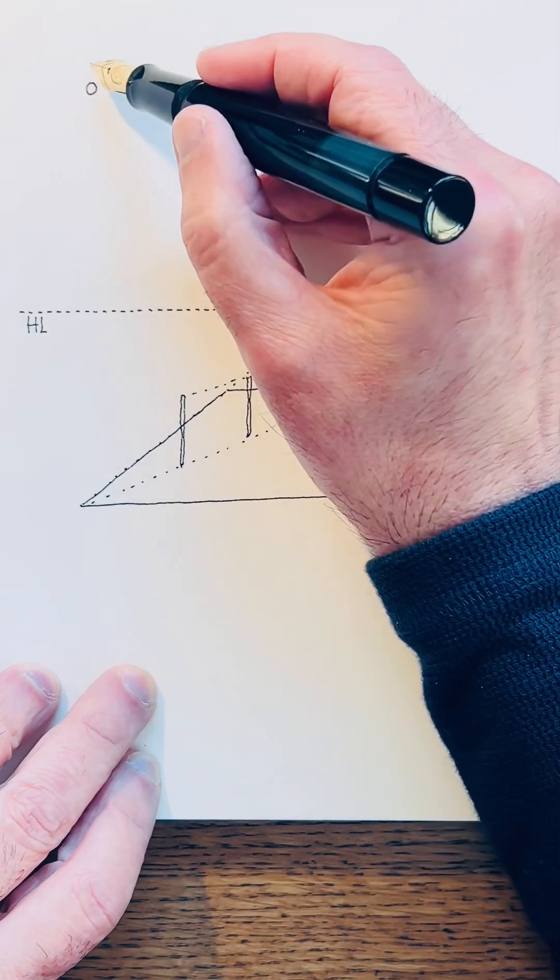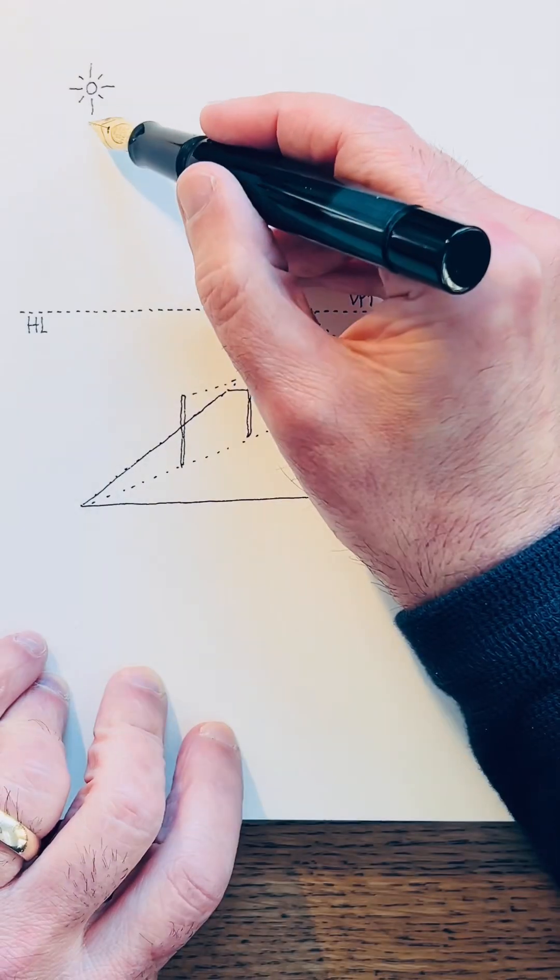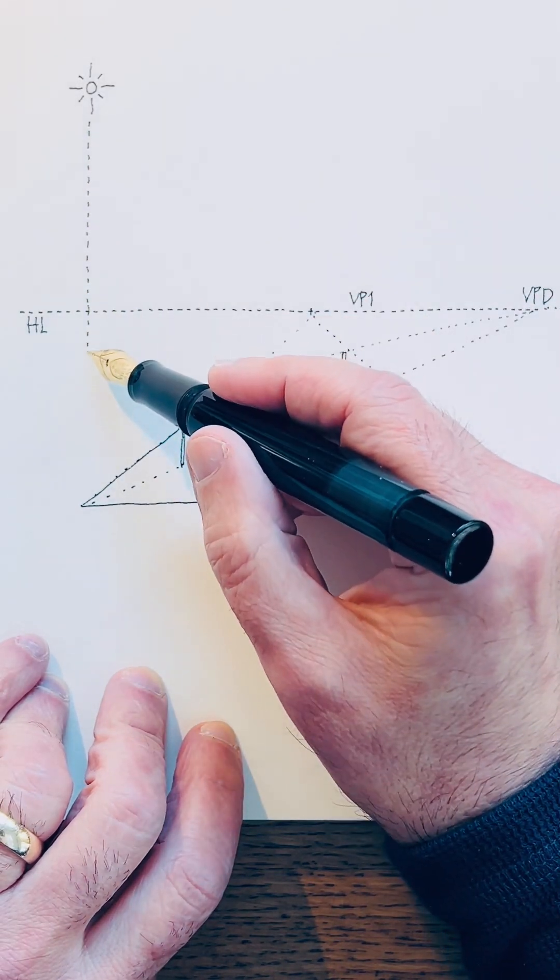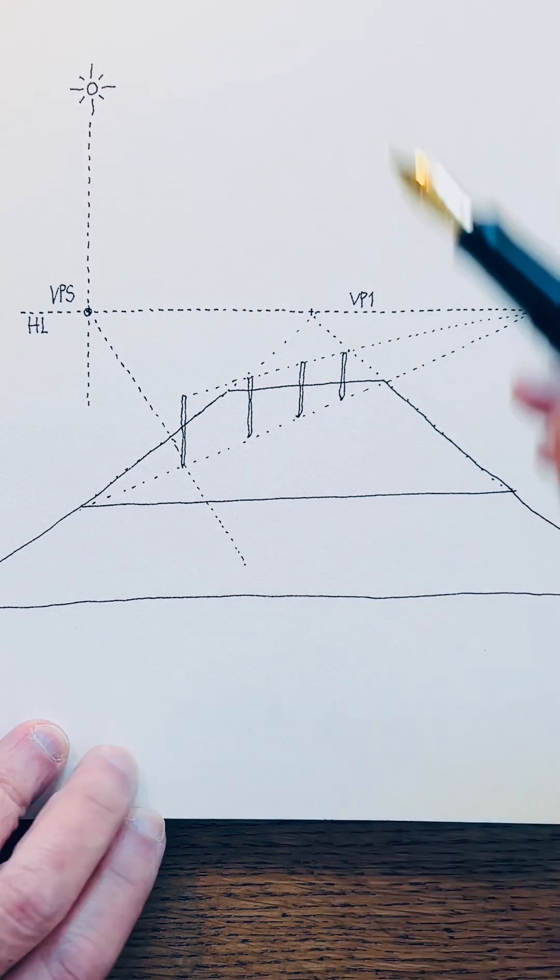I'm going to define a vertical line that intersects the horizon line to find the vanishing point for all the lines. This helps me find the end of the posts, as you can see that dashed line.